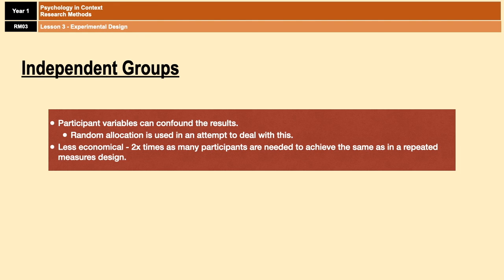Moving on to independent groups. A key limitation is that participant variables can confound the results. Because all participants only experience one condition, having a very chatty person in one condition and a very shy person in another could affect your Speed Up study. To help deal with this, researchers use random allocation — randomly assigning participants to groups via picking names out of a hat or a random name generator. It isn't perfect but it does help. Independent groups designs are also less economical: you need twice as many participants as in a repeated measures design because participants only experience one condition.